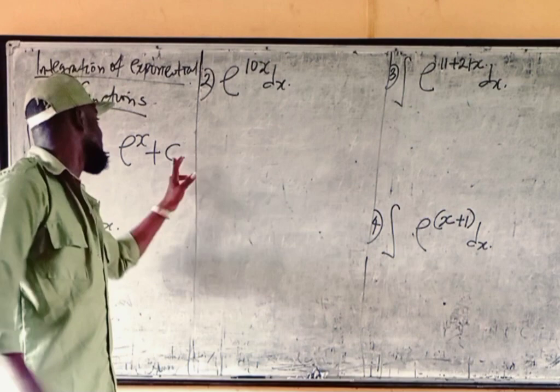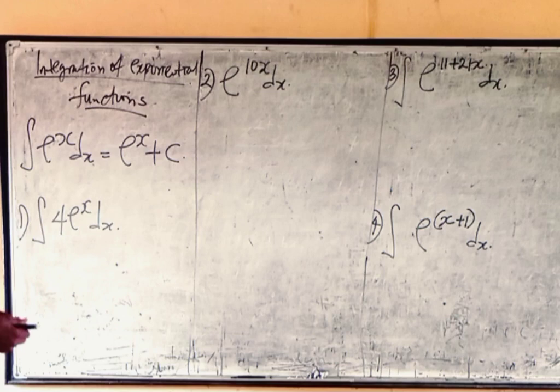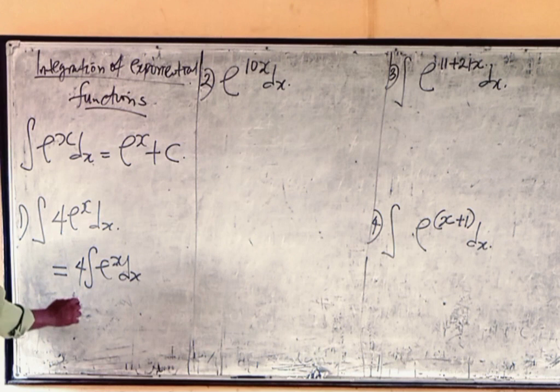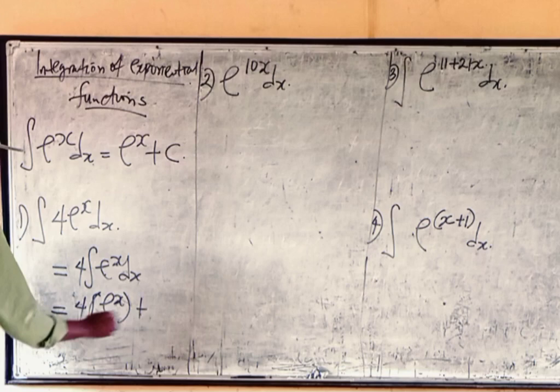So what about integrating 4 exponential x? That's the integral of 4 exponential x dx. Because 4 is a constant, combine and factor it out. We're going to have 4 integral exponential x dx, and then plus c. We're going to have 4 exponential x plus c.